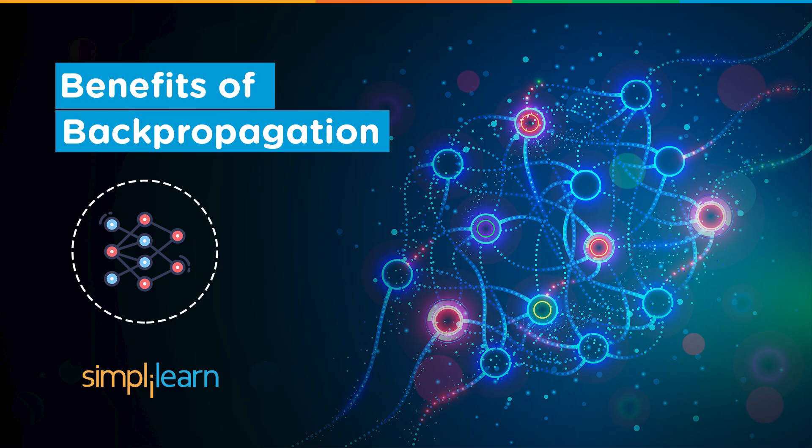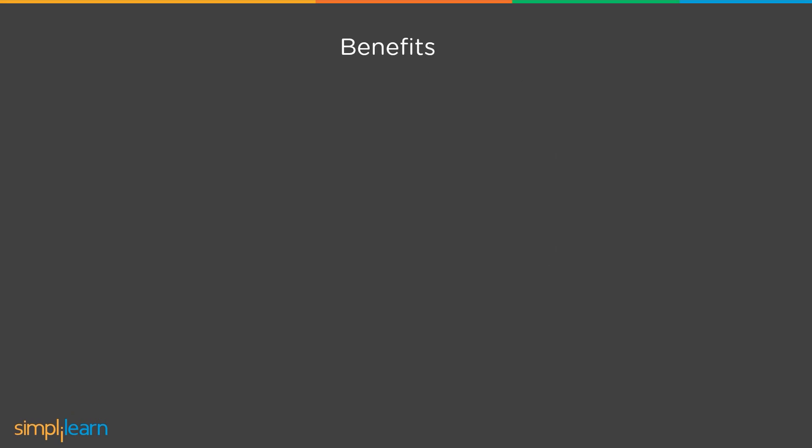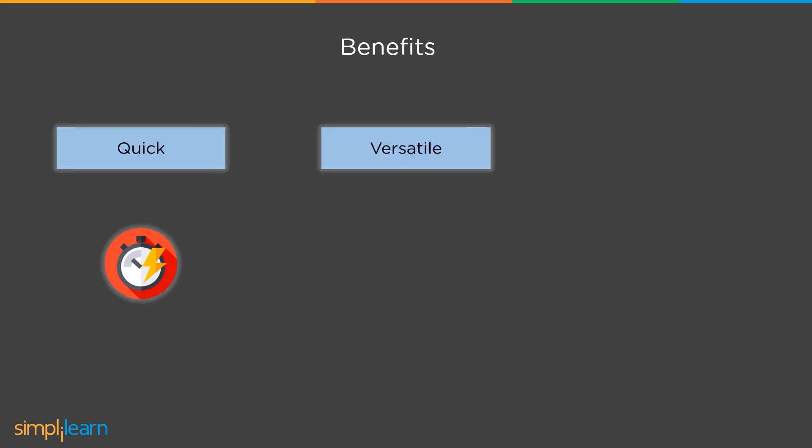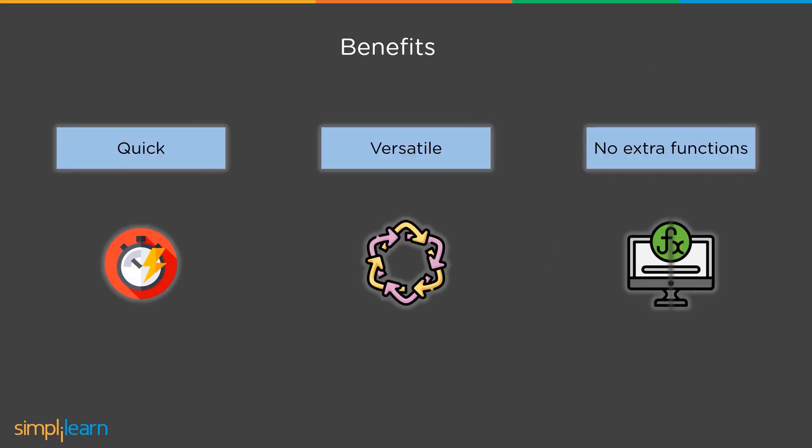And why do we need to choose backpropagation? Below are some of the important factors on why we need to choose backpropagation. Backpropagation is quick, easy, and simple to implement. It is a versatile method, because it doesn't need prior network knowledge and only has input numbers as parameters to tune. And there is no need to make any special note of the characteristics of the function that must be taught, because it is a common way that typically works effectively.